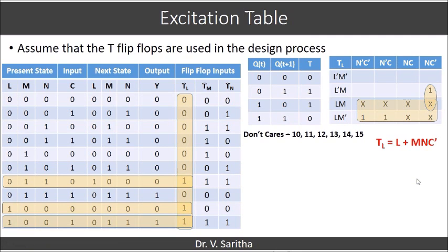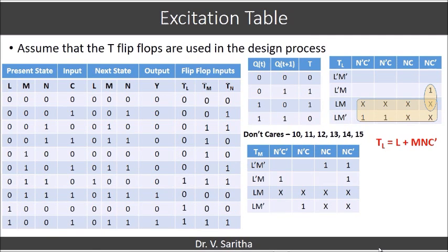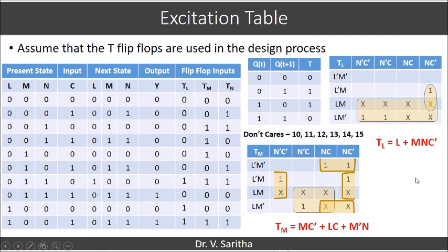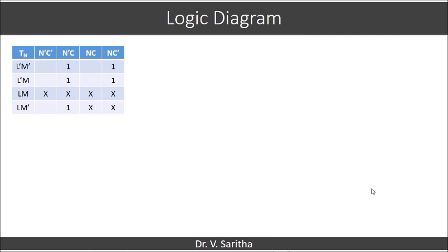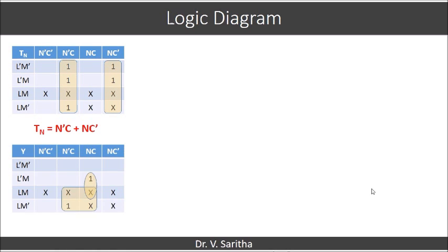Now we have to similarly get TM and TN. TM is considered like this. Mapping goes in this fashion — we get a quad of four ones, another quad of four ones, and another quad of four ones. So we write the expression as: TM = M·C̄ + L·C + M̄·N. For TN, the expression is N̄·C + N·C̄, which is C exclusive-or N.